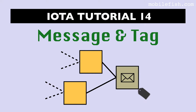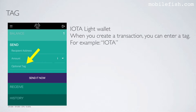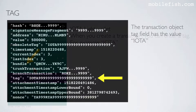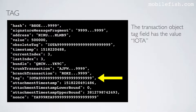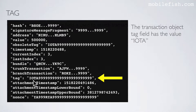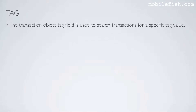In this video I will explain what the purpose is of a tag and how to store a message in a transaction. This is the IOTA light wallet. When you create a transaction you can enter a tag. For example you can enter the tag IOTA in this field. The transaction object tag field has the value IOTA as you can see over here. The transaction object tag field is used to search transactions for a specific tag value.